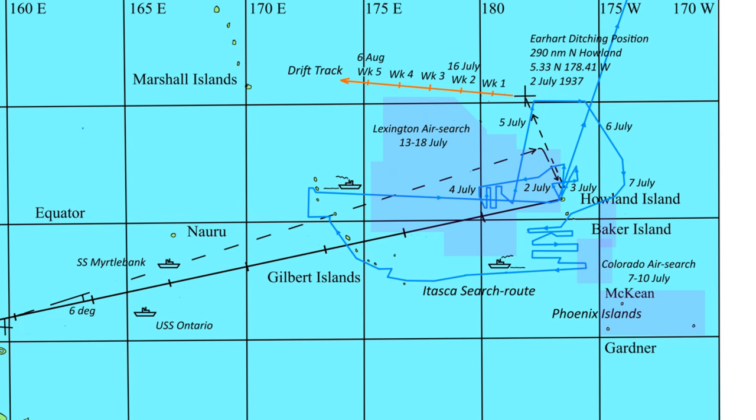Late on the 4th, Itasca was ordered to sail north to a location 281 miles north of Howland, which was mentioned in a garbled radio message picked up by the Navy at Hawaii. They got there on the 5th and turned east, but found nothing.